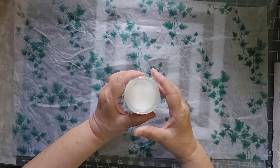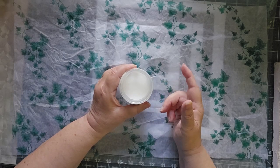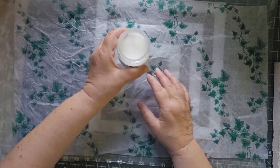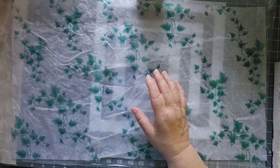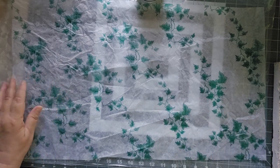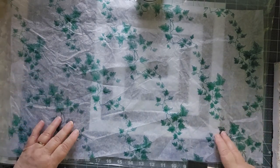Now this Mod Podge is about 3 to 1. So I have 3 parts Mod Podge to 1 part water, just thinning it down a little bit because I don't need a whole lot.